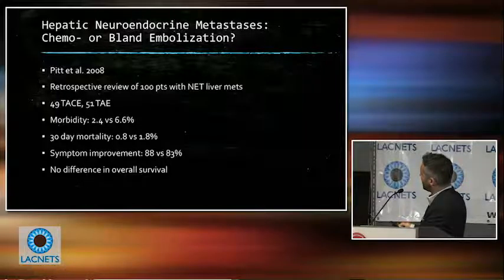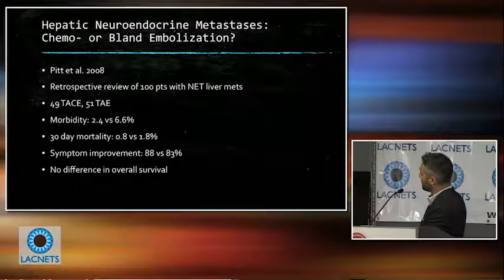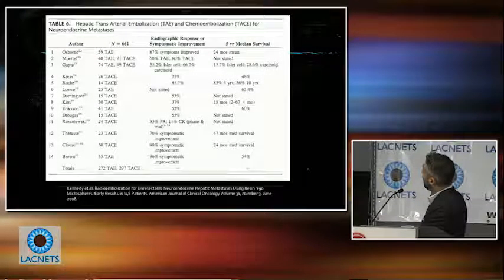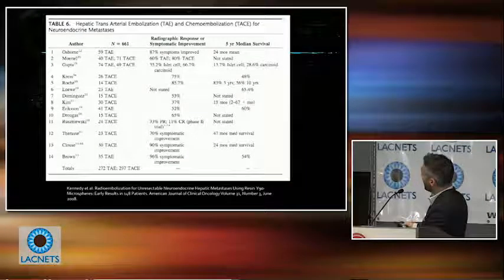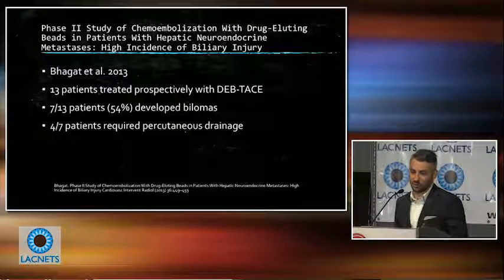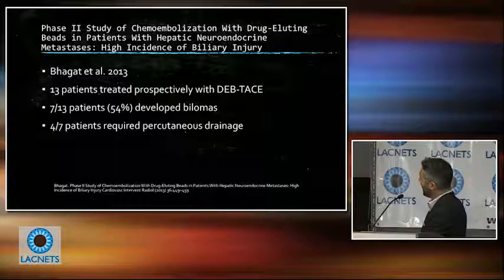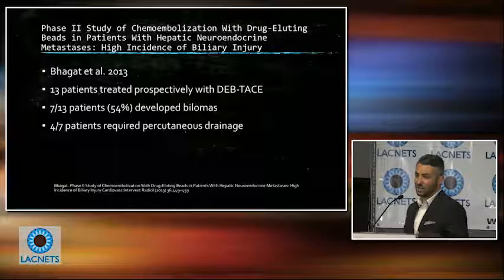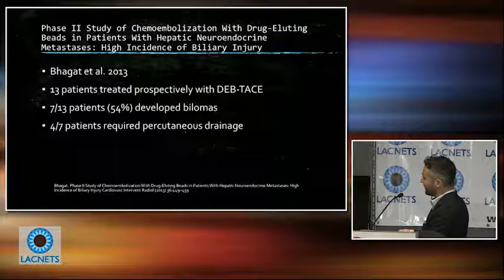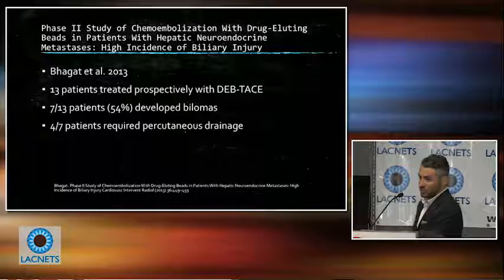Chemo and bland embolization both do quite well. A 2008 study of 100 patients — half with TACE and half with bland embolization — showed that morbidity, 30-day mortality, symptom improvement, and survival were all essentially the same. A table of 14 studies shows that radiographic response and symptomatic improvement were quite good with either approach, and survival was also good. However, we tend to favor bland embolization for neuroendocrine tumor because a study of 13 patients using drug-eluting beads found over half developed bilomas — contained bile leaks — with four of the seven requiring drainage procedures.